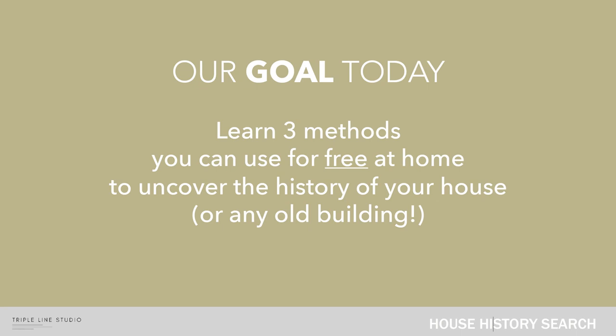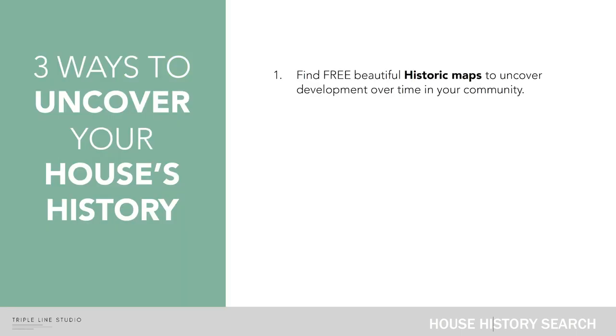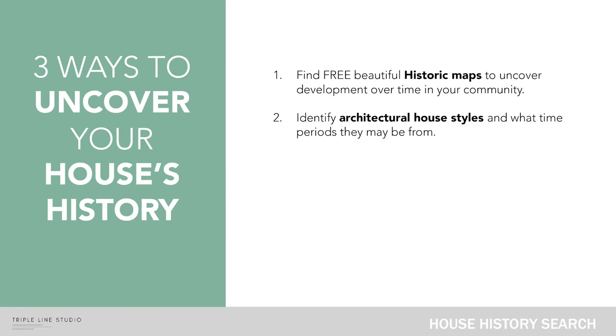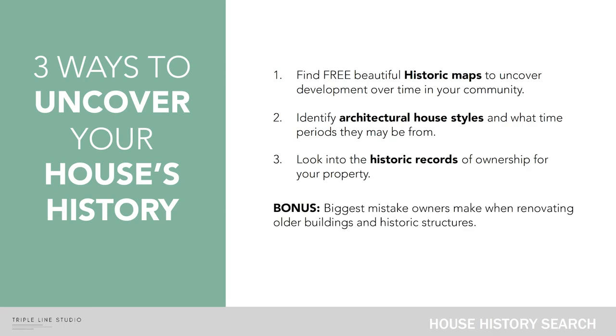Our goal today is to learn the three methods that you can use for free at home to uncover the history of your house, or really for any old building — this applies for a commercial building as well. So the first way is by finding free, beautiful, historic maps to uncover development over time in your community. The second way is by identifying architectural house styles and what time periods they may be from. The third way will be looking into the historic records of ownership for your property. And we will have a bonus at the end about the biggest mistake owners make when renovating older buildings and historic structures.